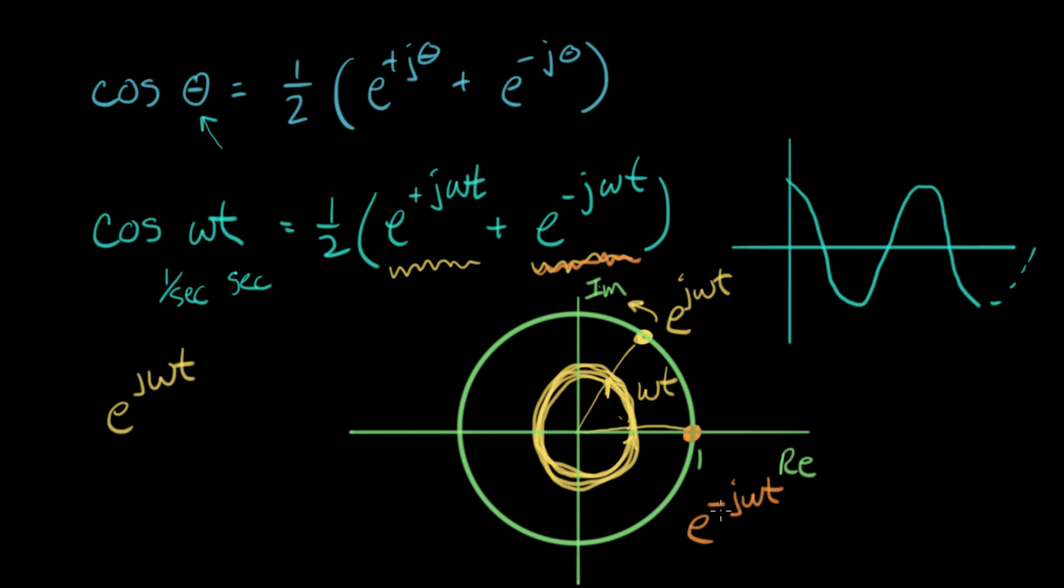Now, as time gets bigger, the angle, the thing multiplying j is minus omega t. And so the angle is becoming more and more negative. So after a little bit of time, it's here. And after a little bit more time, it's here. And what we notice is it keeps, it rotates this way. This is what happens when you have e to the minus j omega t. You rotate in this direction, and it keeps going and going and going.